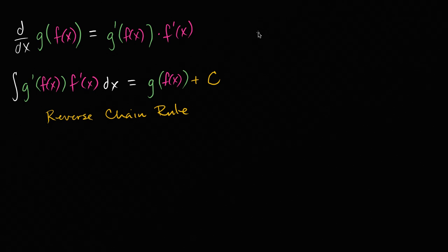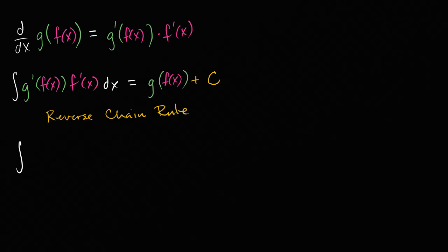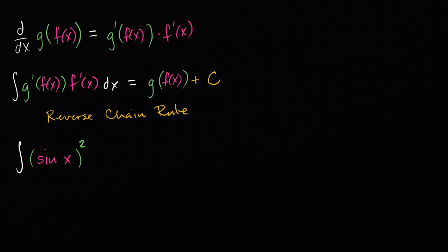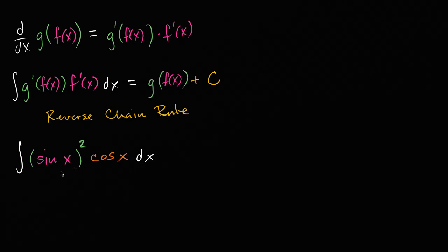Let me give you an example. I'm going to color code it so it jumps out a little bit more. Let's say we had sine of x squared — I'll write it that way, and I think you might guess why — times cosine of x. I encourage you to pause this video and think about: does this meet the pattern? And if so, what is this indefinite integral going to be?